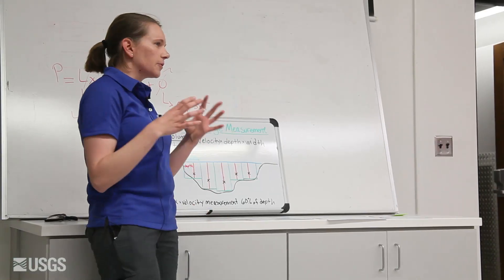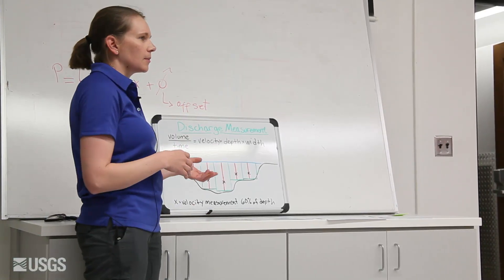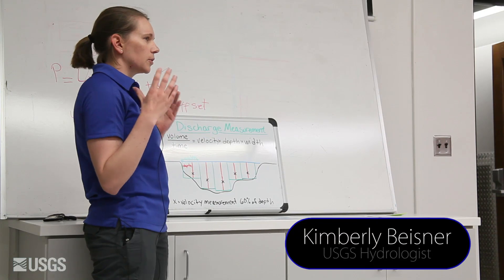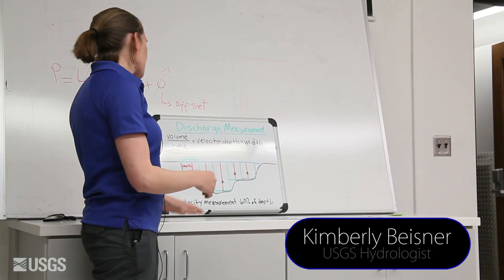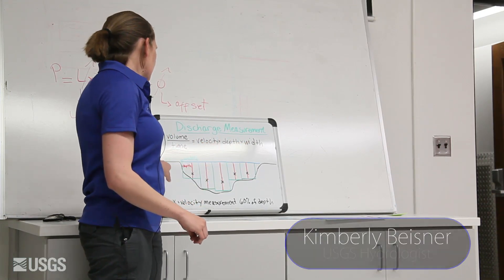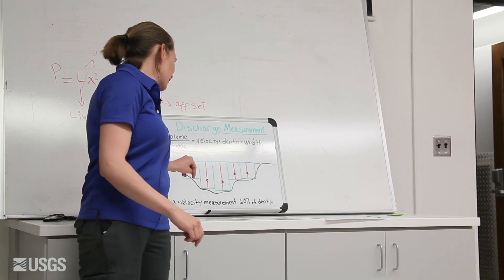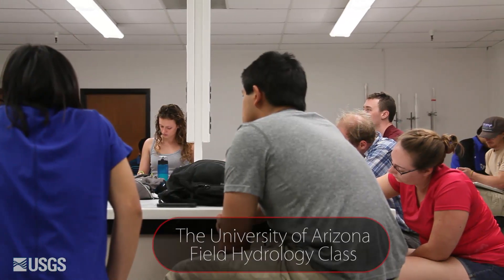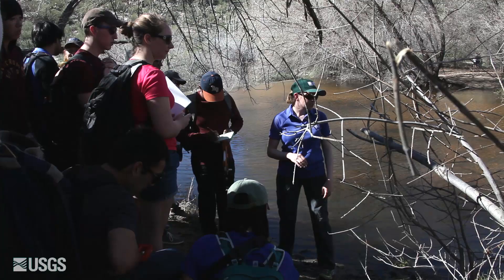The idea is you want to get a volume per time, so you want to figure out how much water is moving past a point in time. And to do that — this is my little picture of a cross-section of a stream — you need to know the velocity, the depth, and the width.